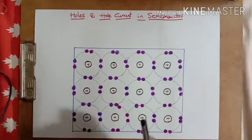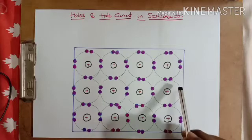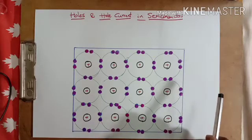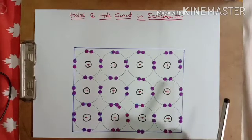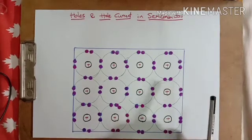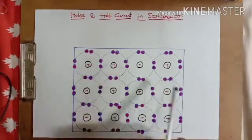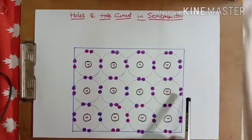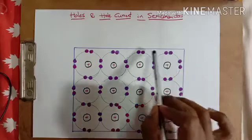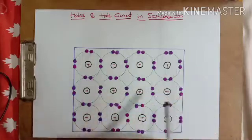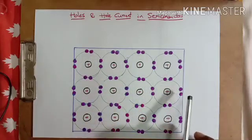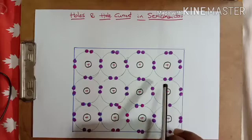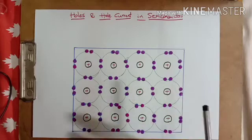As you learned in the video on the formation of energy bands in semiconductors, there is a valence band and a conduction band, with a forbidden gap between them. All the energy states in the valence band are filled.